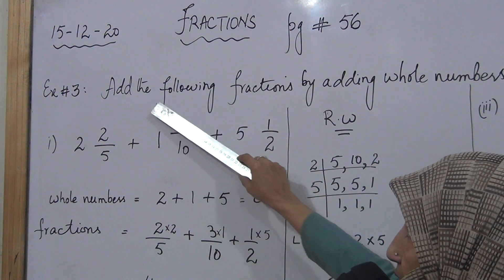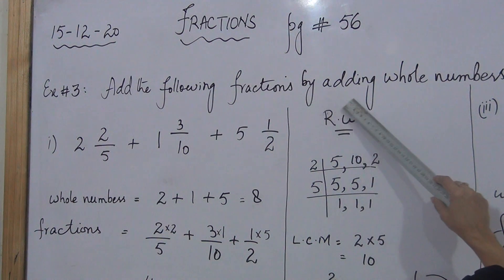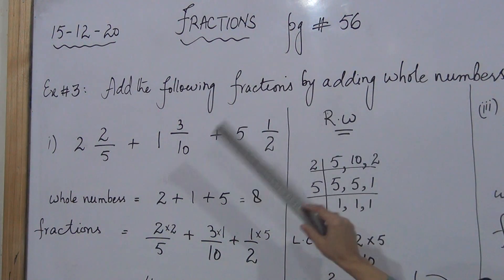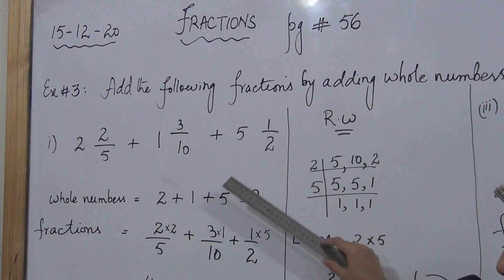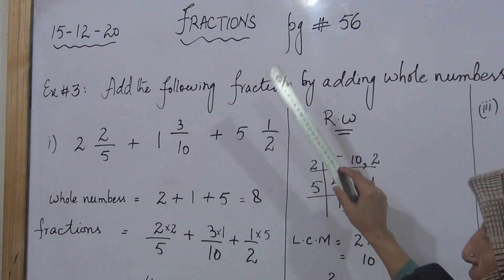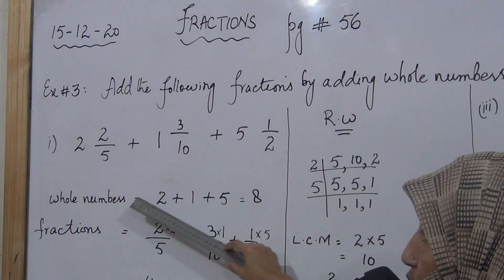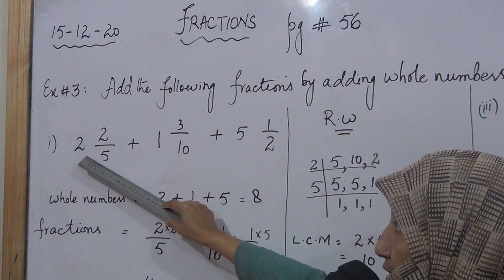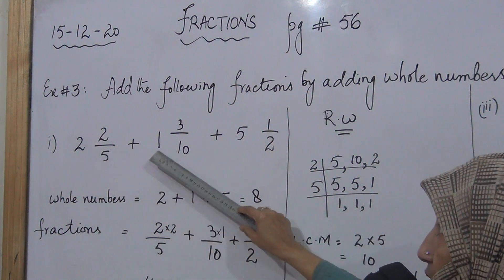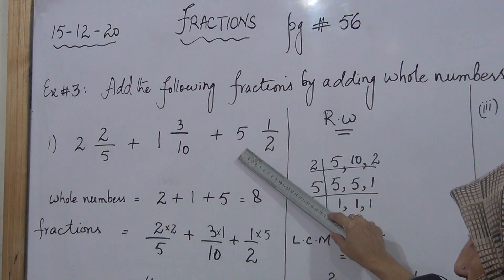The restriction is that we will add the fractions, but the whole numbers we will add separately, and the fractions we will add separately. According to the requirement of the exercise, first we will separate the whole numbers. 2 is the whole number in the first fraction, 1 is the whole number in the second, and 5 is the whole number in the third.